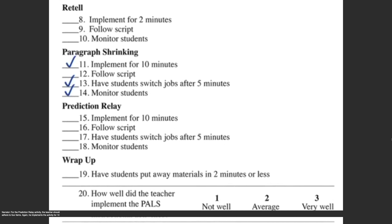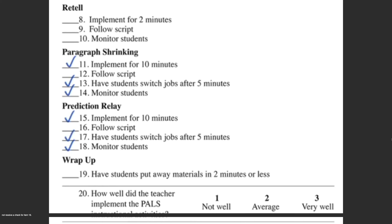For the prediction relay activity, the teacher should adhere to four items. Again, he implements the activity for ten minutes, making sure to instruct his students to switch jobs after five minutes. For this reason, he will get checks for items 15 and 17. He also receives a check for item 18 because he monitors his students. However, he once more fails to follow the script and therefore does not receive a check for item 16.